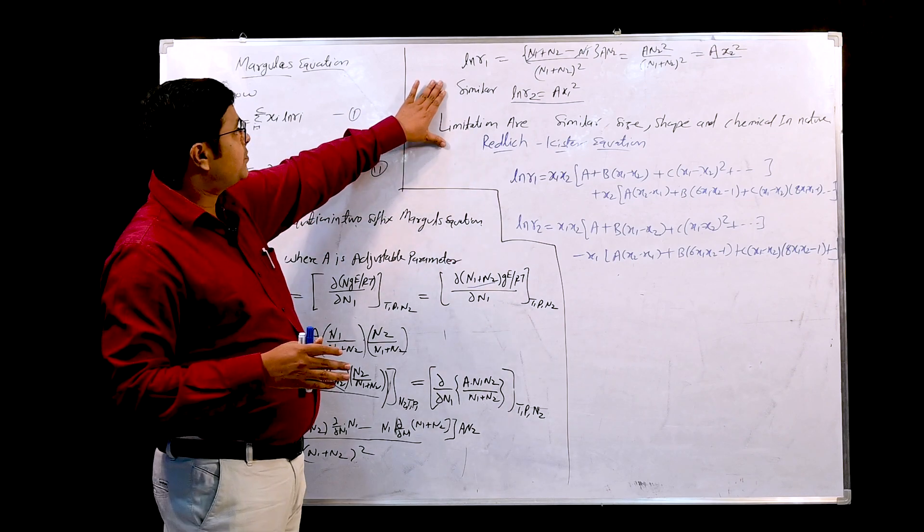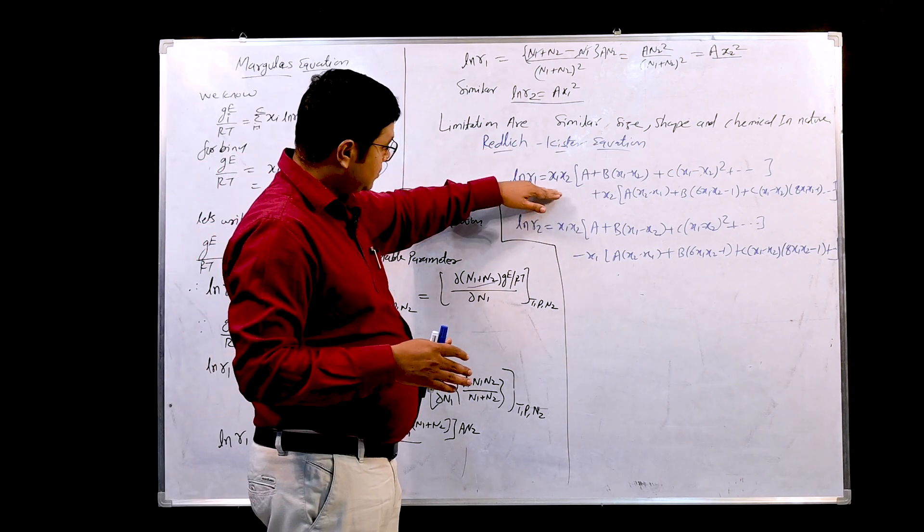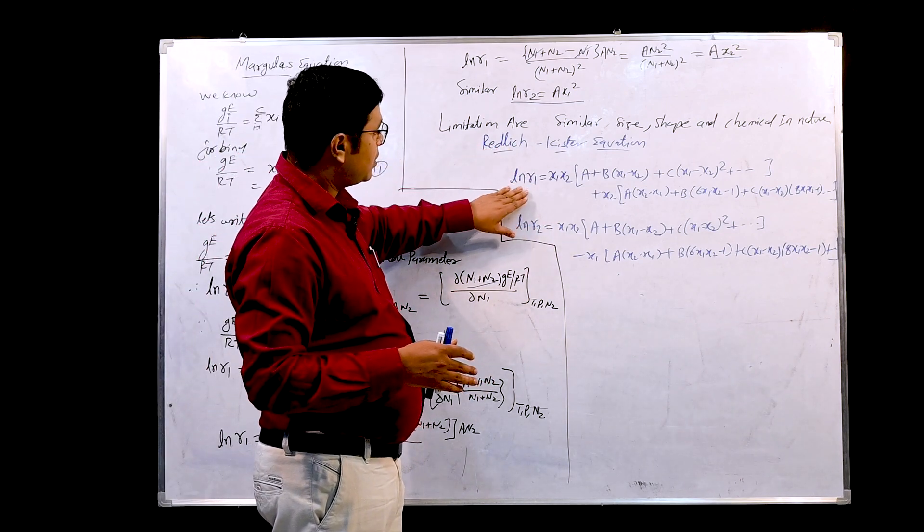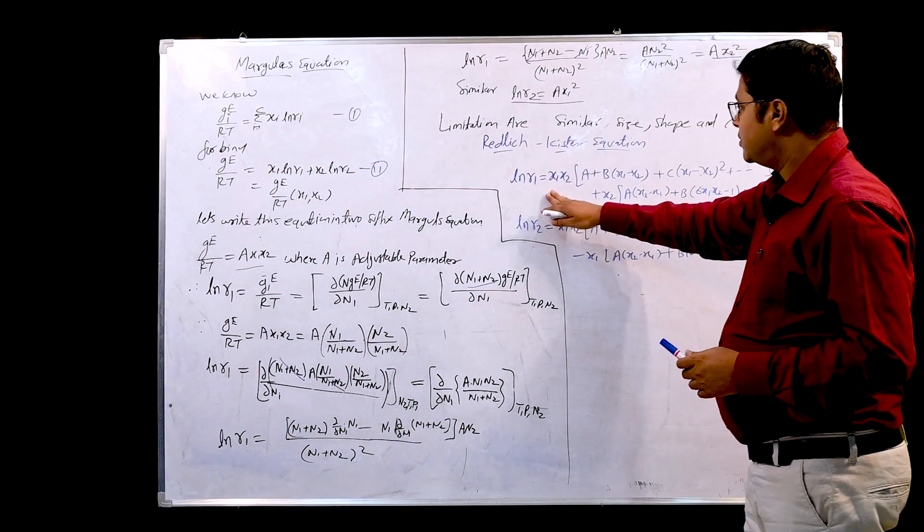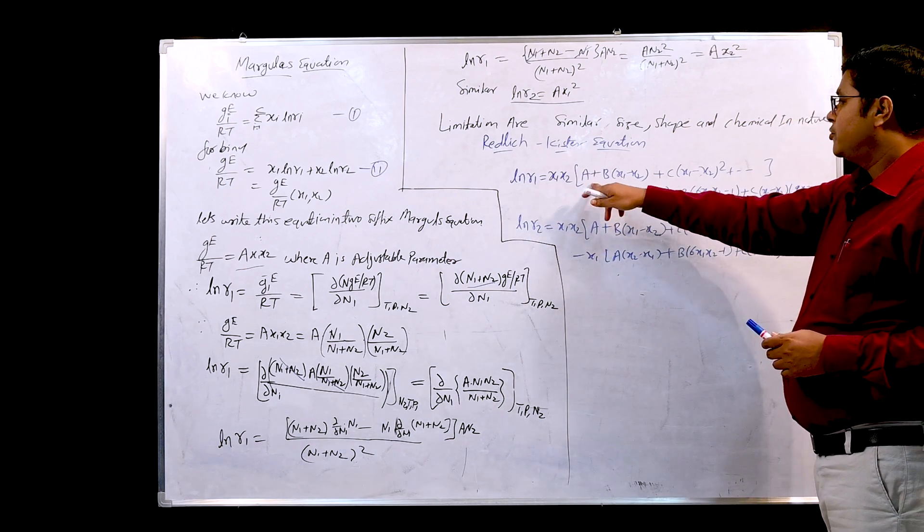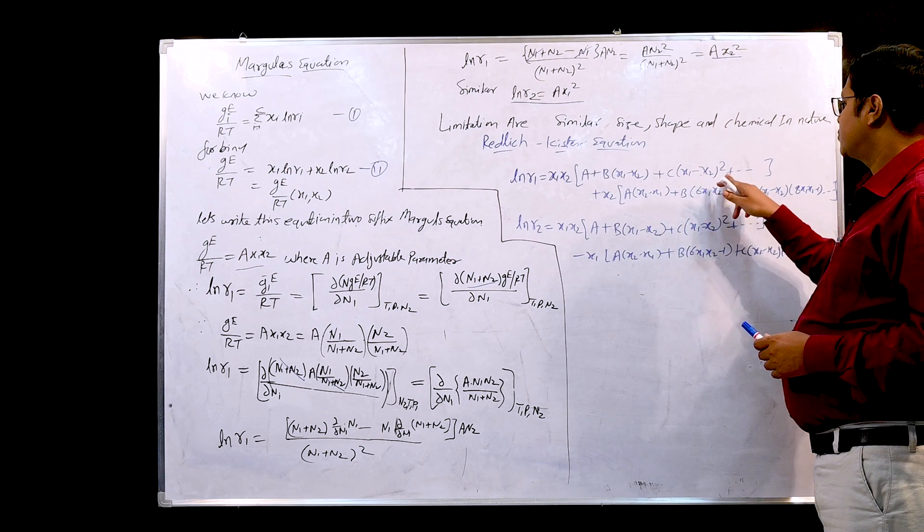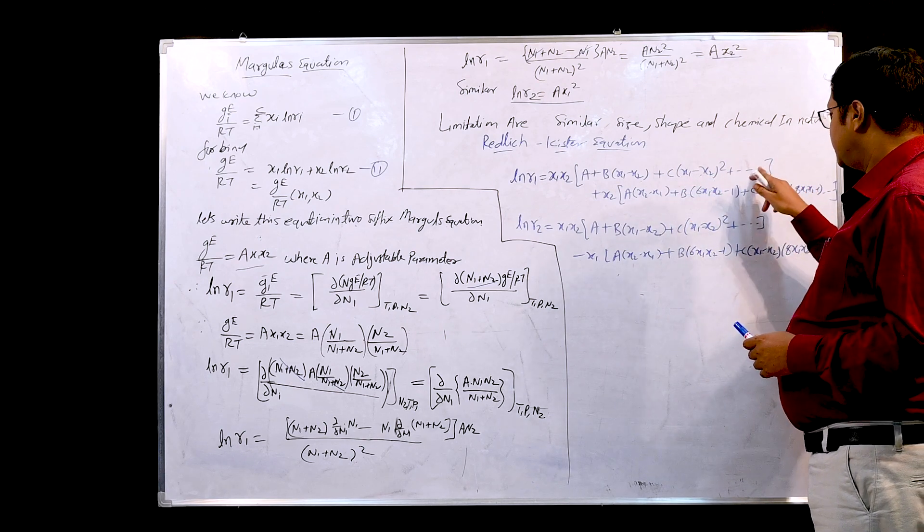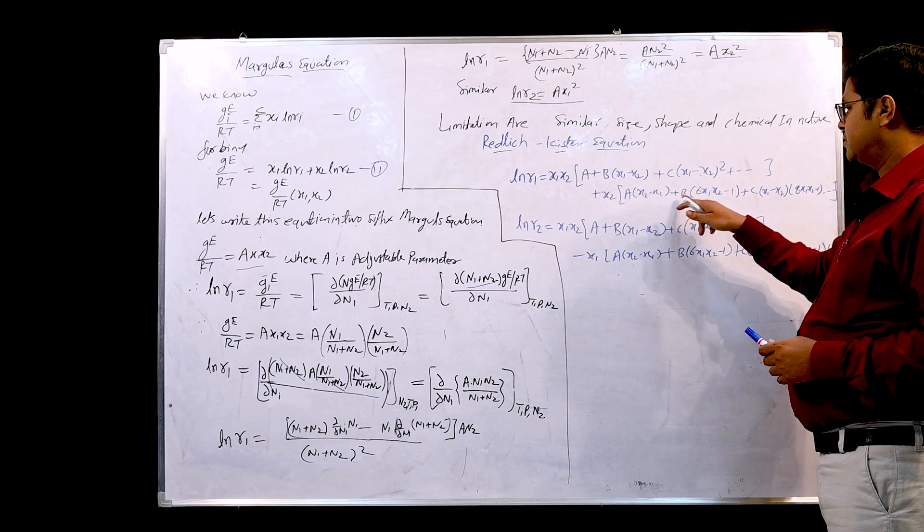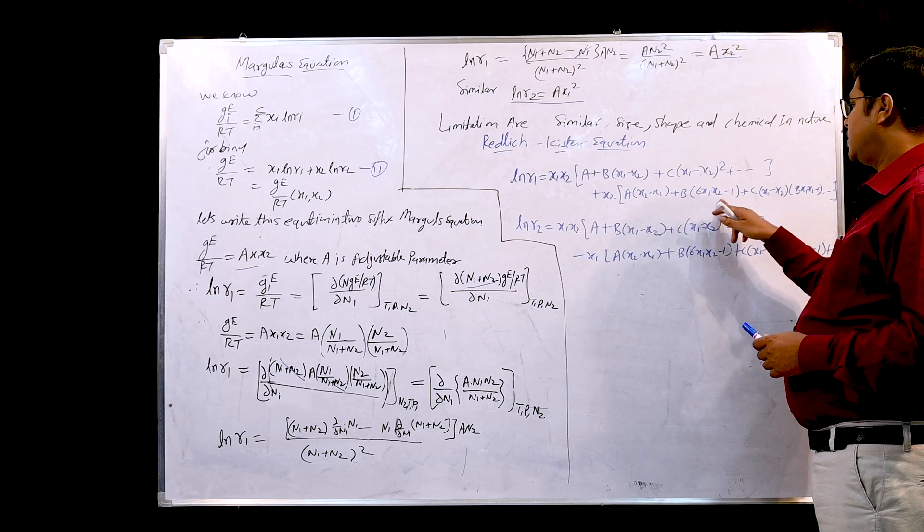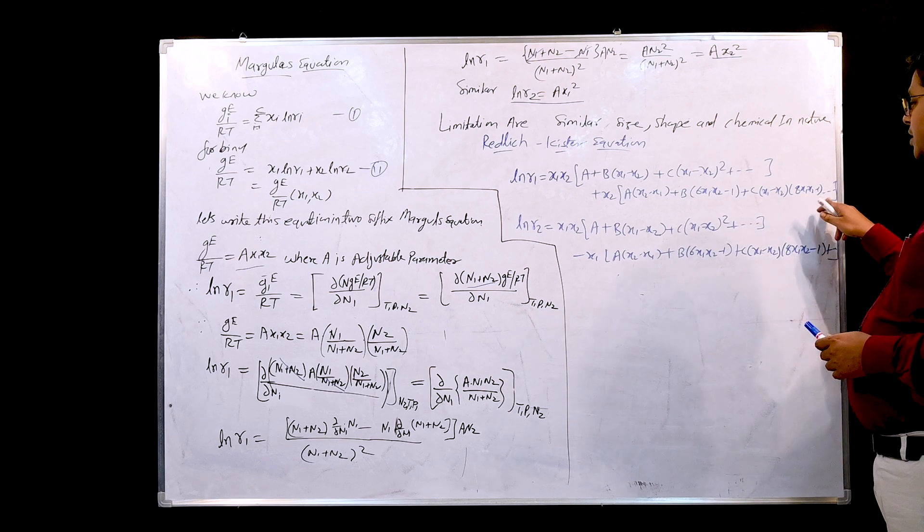To sort out such problems given by the Margules equation, the Redlich-Kister has specified another relation for ln gamma 1 and gamma 2. Here he has given the expression: ln gamma 1 equals x1 into x2 into bracket A plus B(x1 - x2) plus C(x1 - x2) square, plus this bracket close, plus x2 into A(x2 - x1) plus B(6x1 x2 - 1) plus C(x1 - x2)(8x1 x2 - 1) and so on.